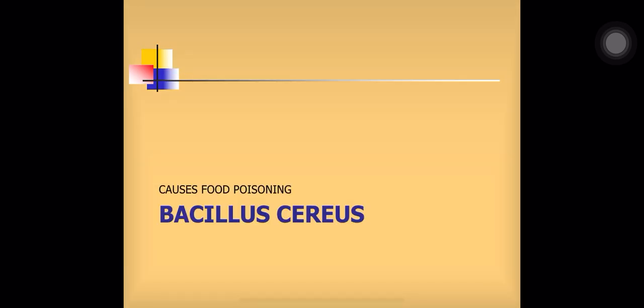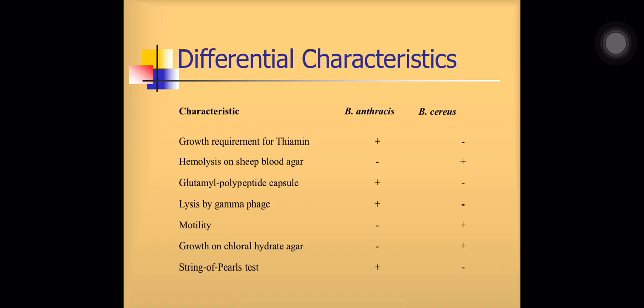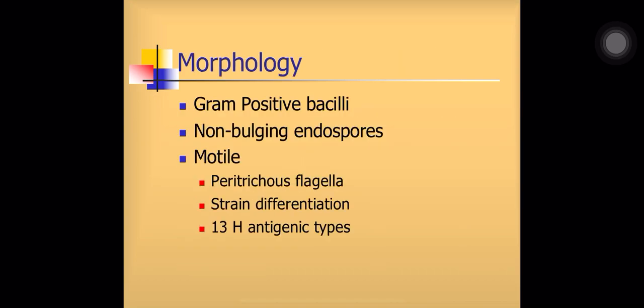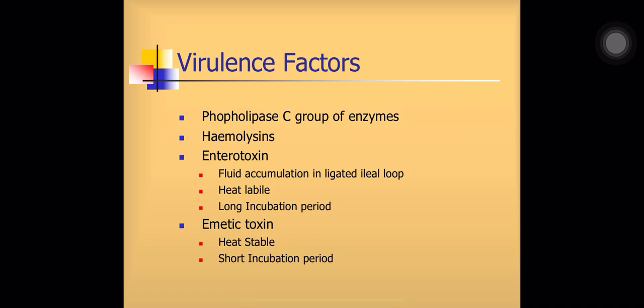Bacillus cereus is another member of the genus and causes food poisoning. It is a gram-positive bacillus with non-bulging endospores. It is motile with peritrichous flagella and can be grown on nutrient agar. MYPA medium — mannitol, egg yolk, phenol red, polymyxin agar — is a selective medium useful for Bacillus cereus. Virulence factors of Bacillus cereus include phospholipase C, group of enzymes, hemolysins, enterotoxins, and emetic toxins.